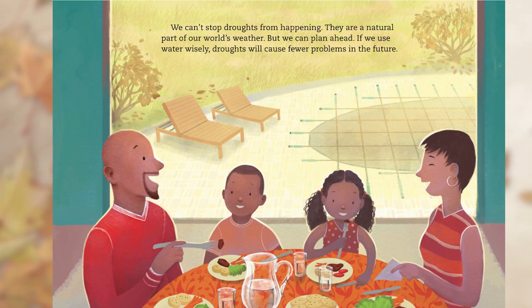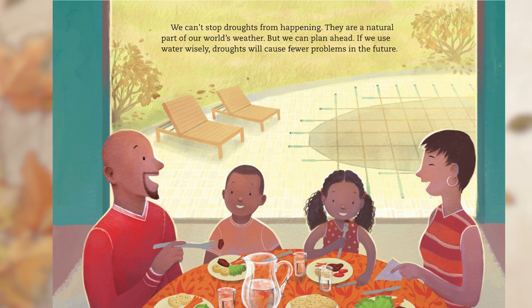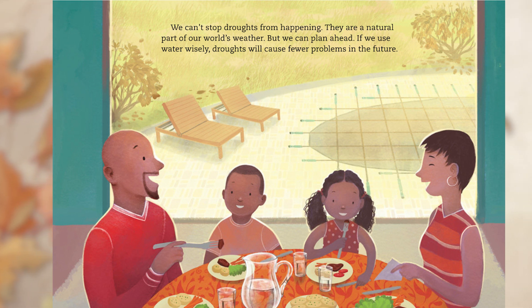We can't stop droughts from happening. They're a natural part of our world's weather. But we can plan ahead. If we use water wisely, droughts will cause fewer problems in the future.